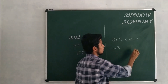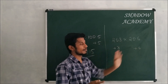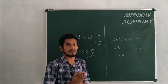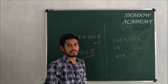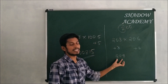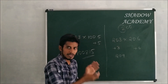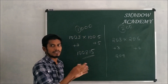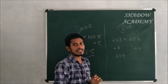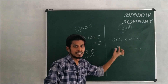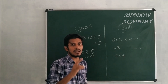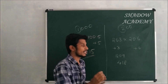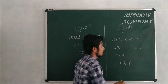Base is 200. 203 has remainder +3 and 206 has remainder +6. Cross-add: 203 + 6 = 209, then multiply by the base 2 to get left part. Then 3 × 6 = 18. That will be our answer for 203 × 206.